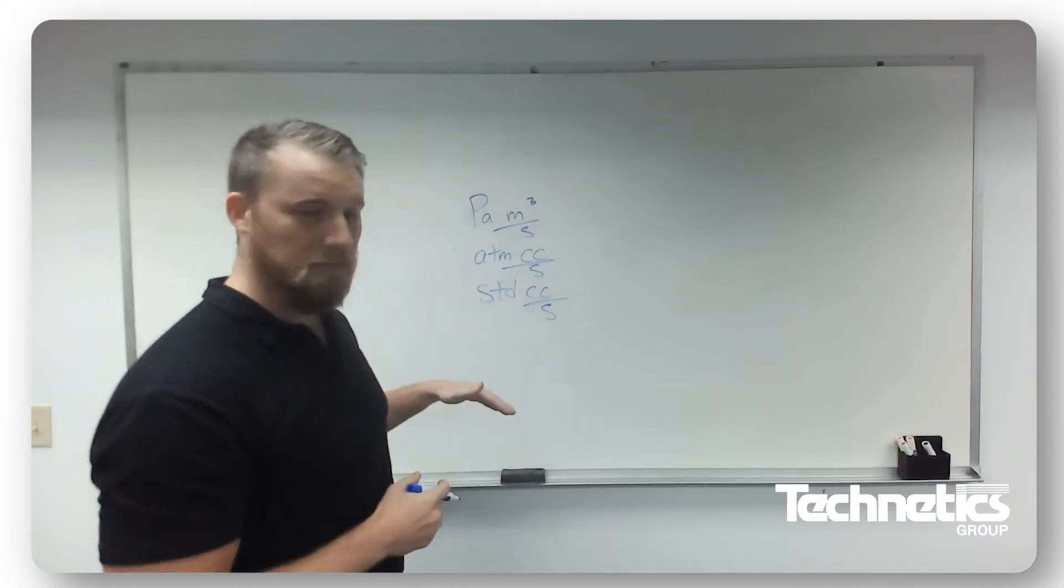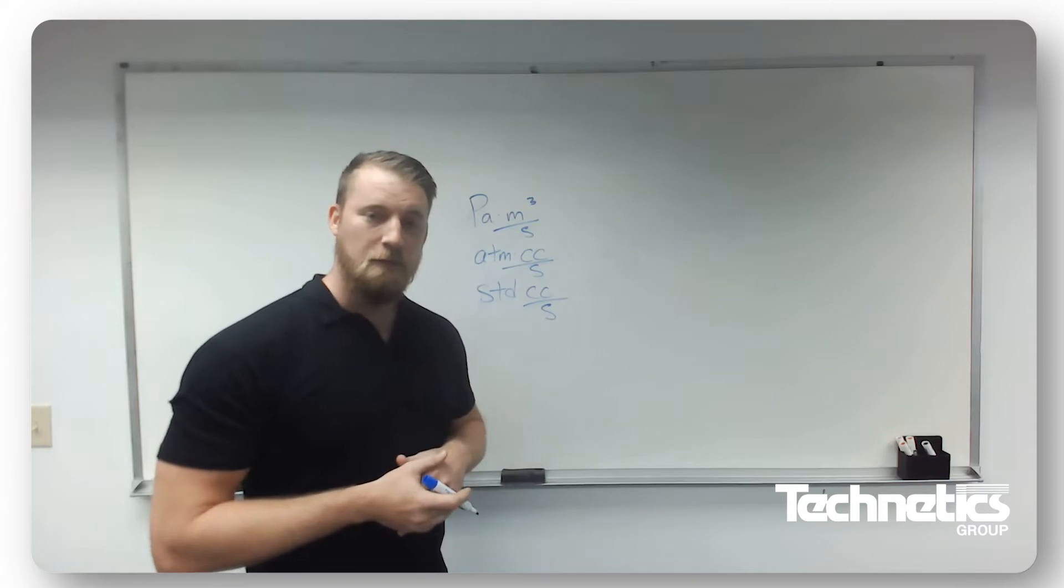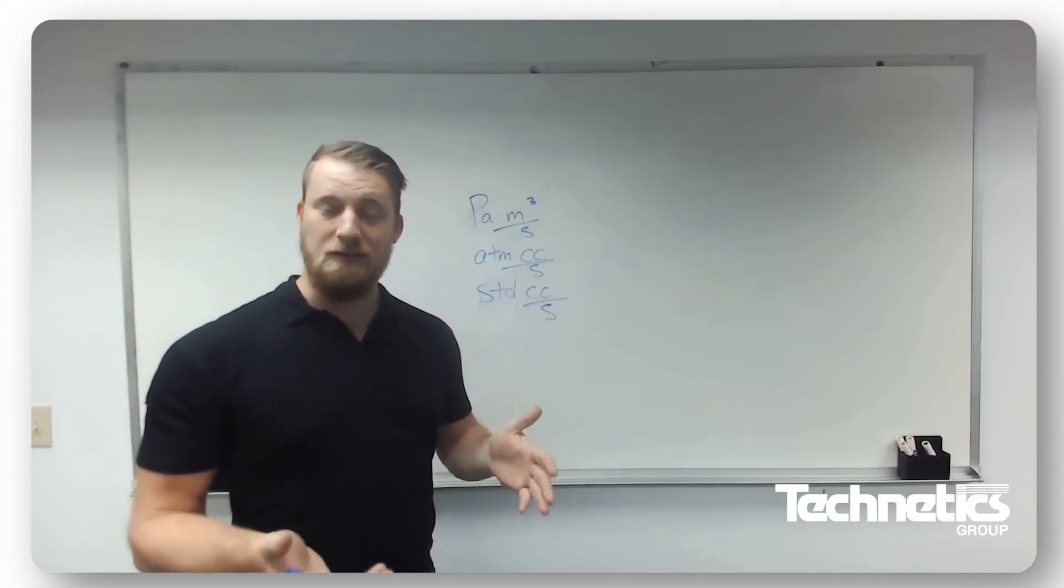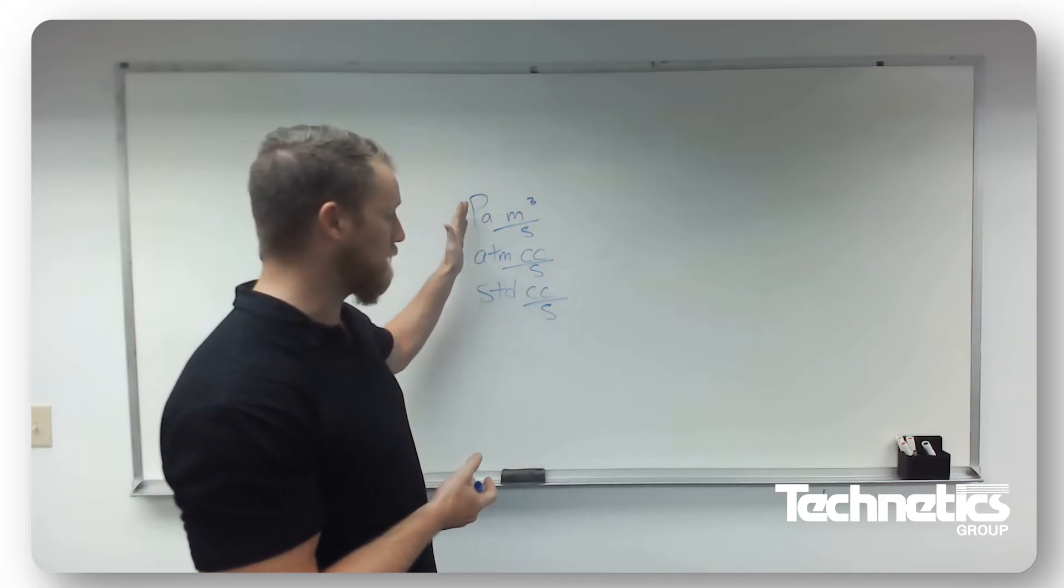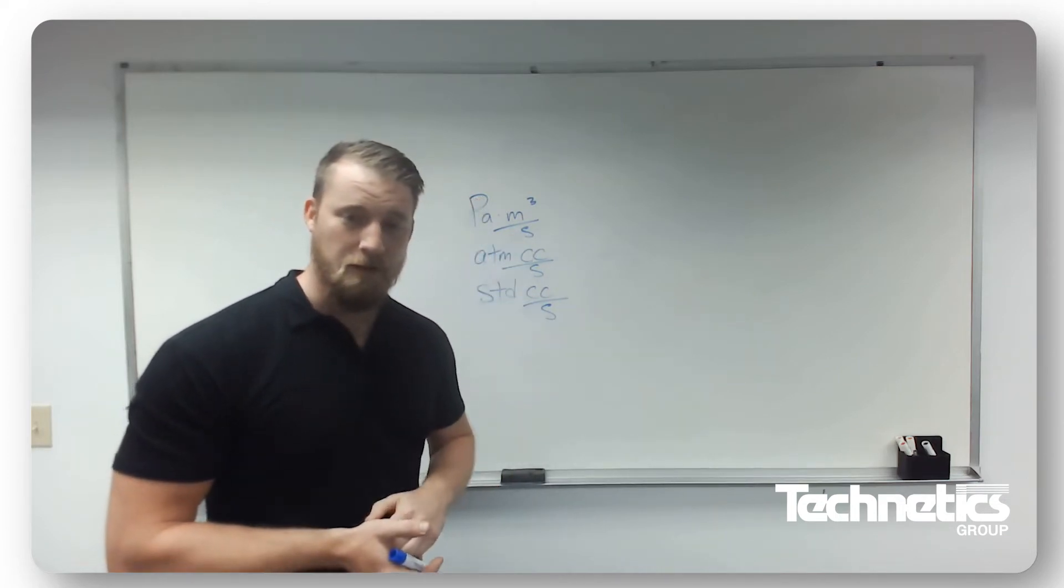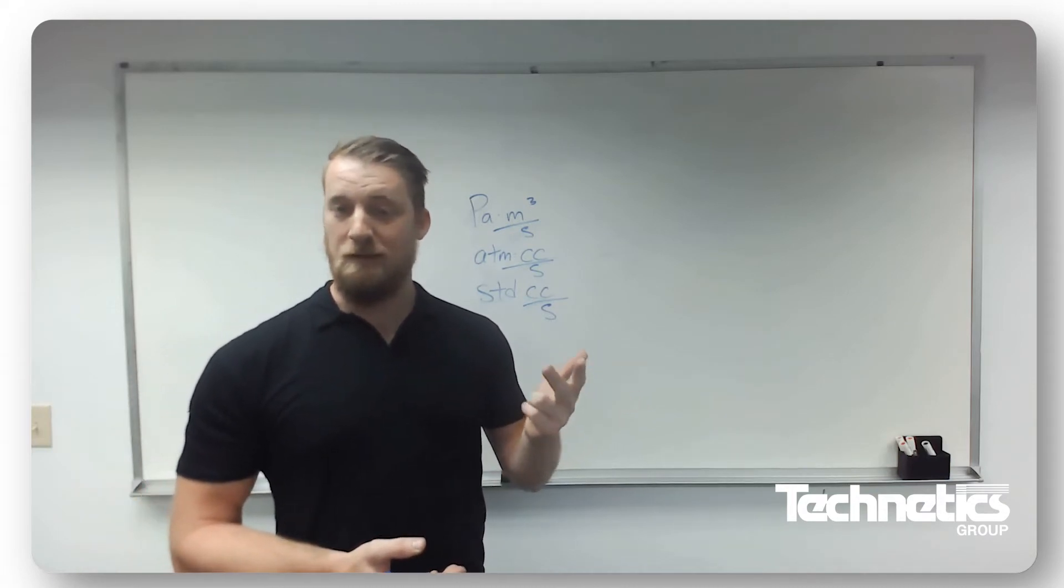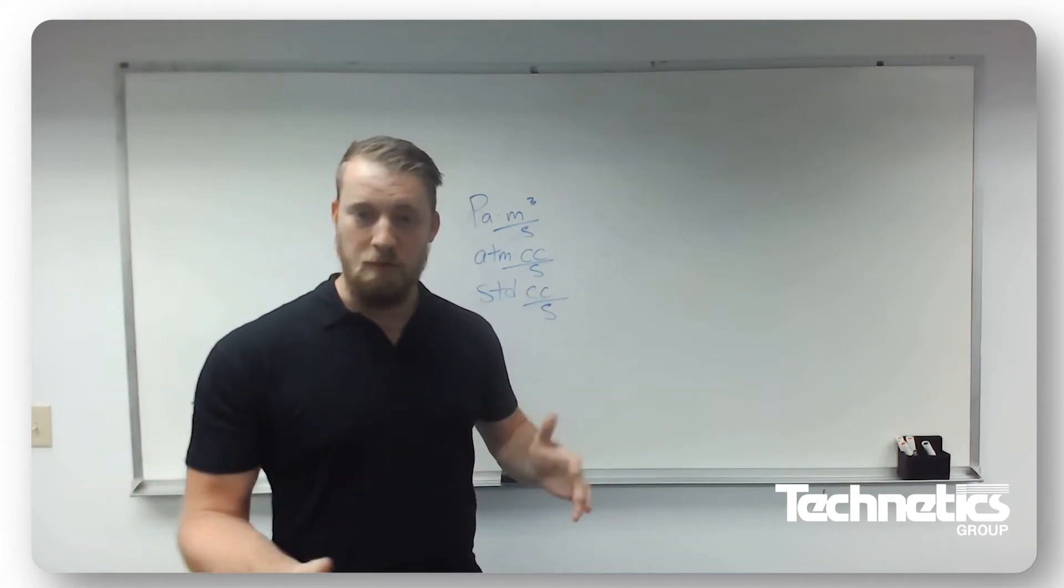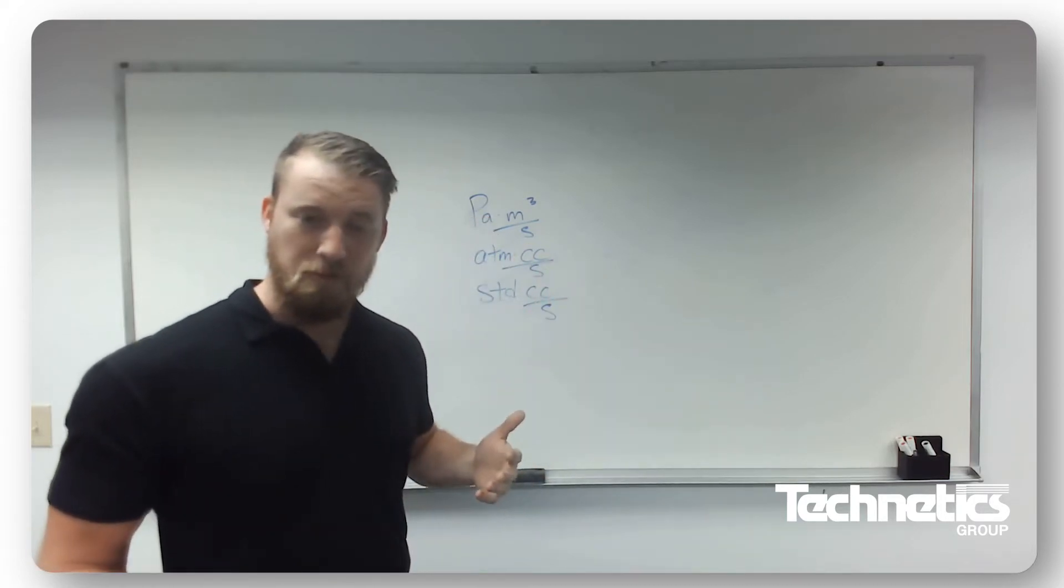Now, all of these units are basically communicating the same information with some conversion factors. And what that information actually is, is a molecular flow rate. The number of molecules that leak out over a unit of time. If you remember the ideal gas law, if we know the pressure, volume, type of gas, and temperature, we know how many molecules there are. Or in our application, the number of molecules that leak out over a given period of time.